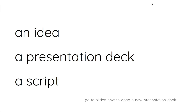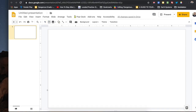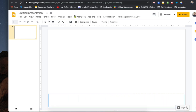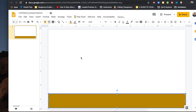To make a digital flipbook you'll need an idea, a presentation deck, and a script. Start by creating your objects to make your first slide. This example will be a volcano and how it works, so I'm going to make a mountain in my first slide.